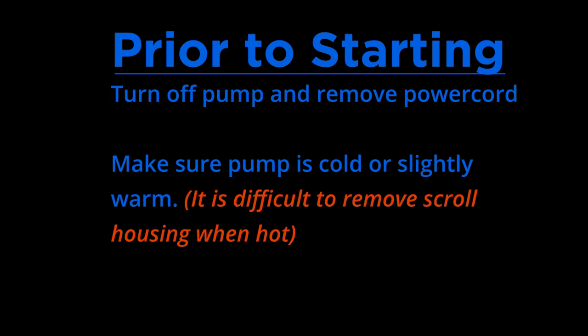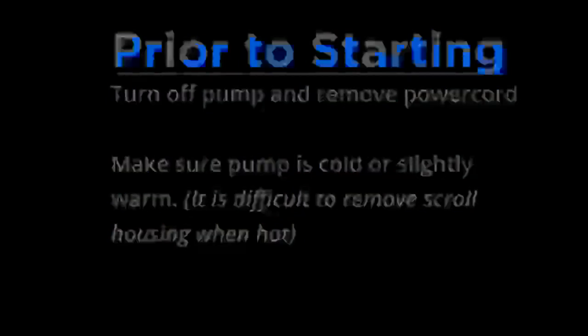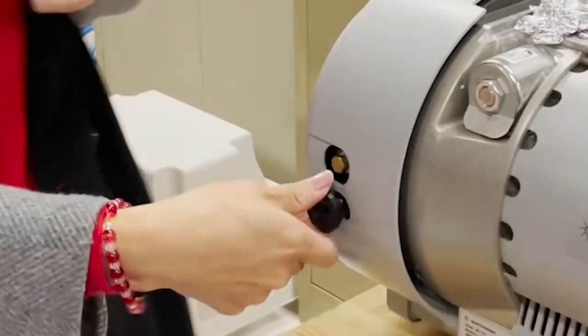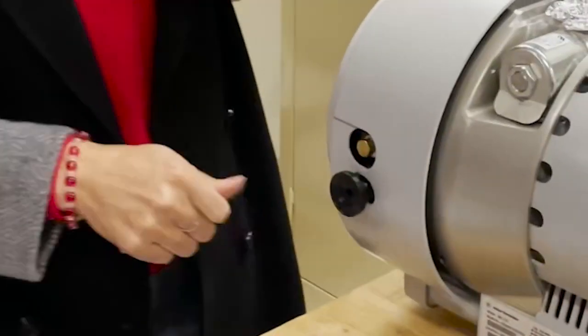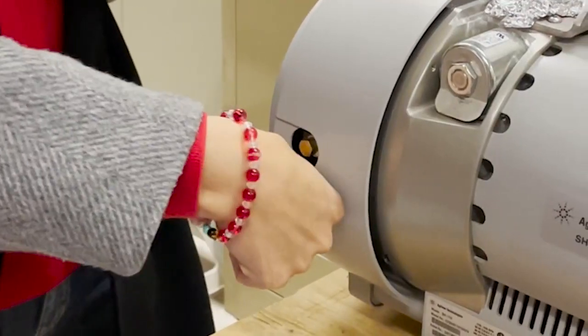So the first step is to turn off the pump and remove the power cord. You can then replace the pump on top of a table or other elevated surface that will make it more comfortable for you to work. If the pump has just been turned off, it may be a little hot to the touch.